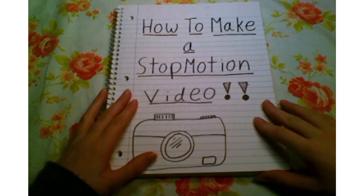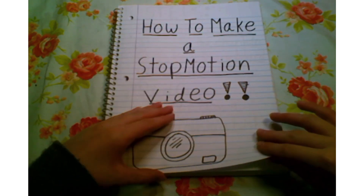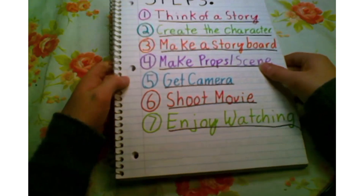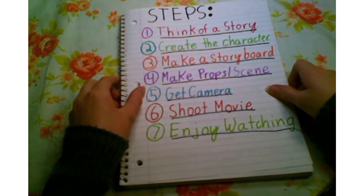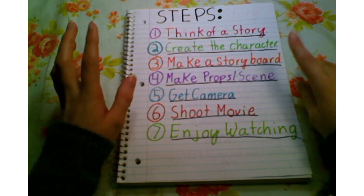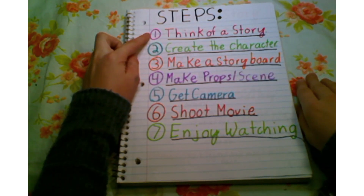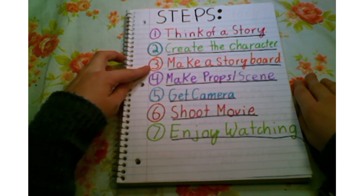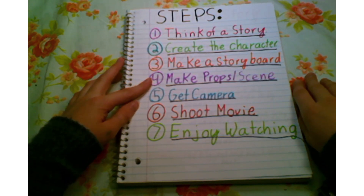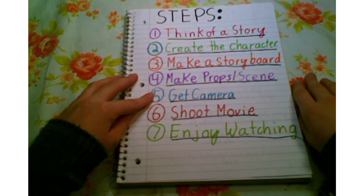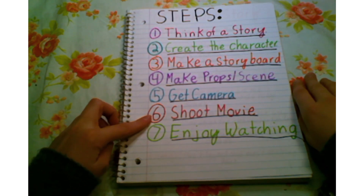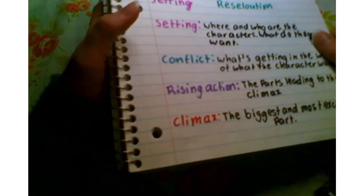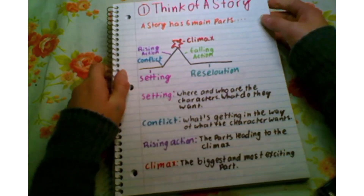Hi guys, today I'm going to show you how to make a stop motion video. There are seven steps to create your stop motion video: the first step is to think of a story, the second is to create the character, the third is to make a storyboard, the fourth is to make props in the scene, the fifth is to get the camera, the sixth is to shoot the movie, and the seventh is to enjoy watching your movie with your family.